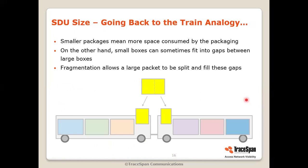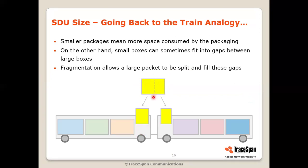Going back to the train analogy: if you have smaller packages, you're consuming more space with the packaging. We showed packages each in their own box, then boxes going into larger boxes, and so on. So if you have more packaging, it takes away some space. On the other hand, if you have smaller packages, you might be able to make use of available space — if you could split a package into two smaller ones, rather than waiting for the next train car, you could fill spaces that are available anyway. Fragmentation is a mechanism that allows a large packet to be split and fill these gaps.